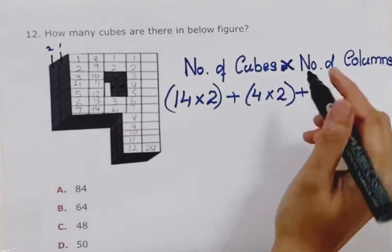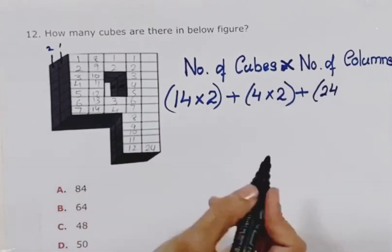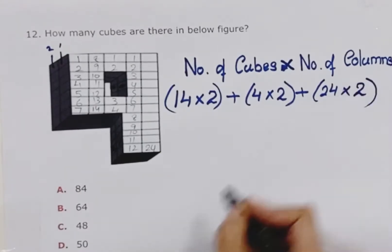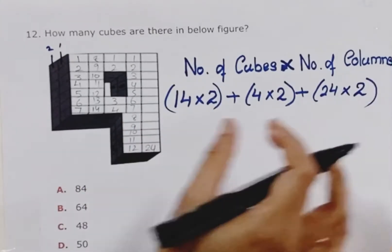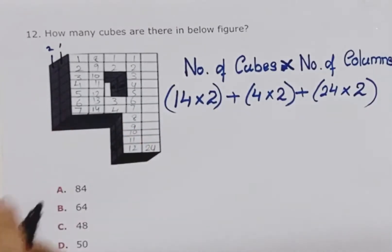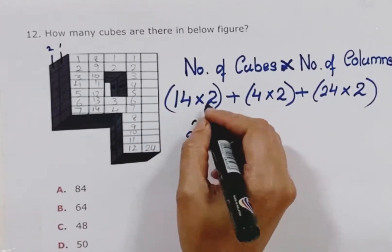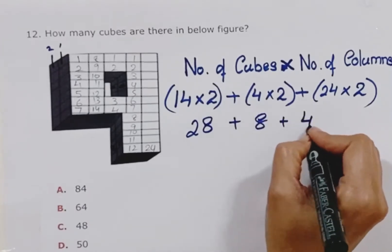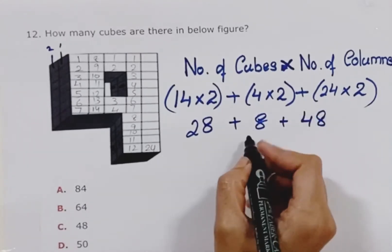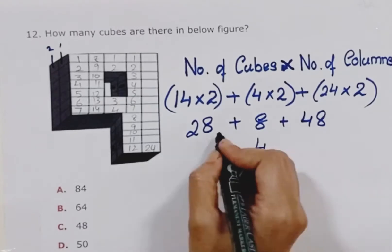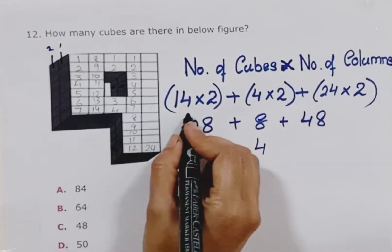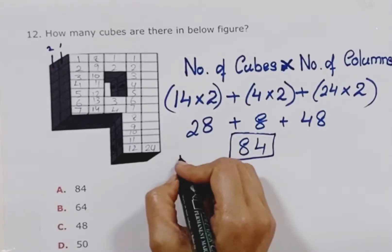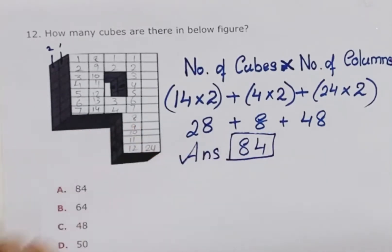24 cubes and the columns here: 1, 2 — 2 columns. The summation of all sections gives you the total cubes. The summation is 48 plus 8 plus 8 plus 8 equals 16, then plus 2, so it's 84. The total cubes in this figure is 84.